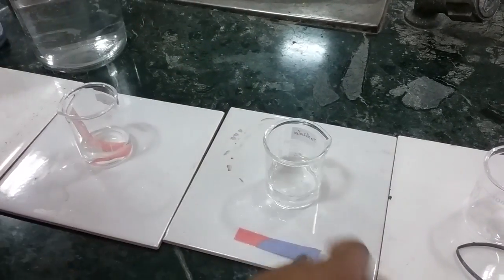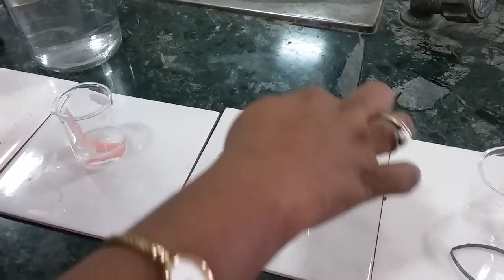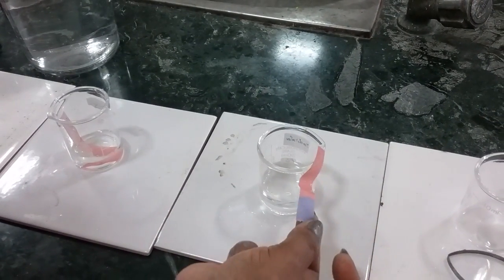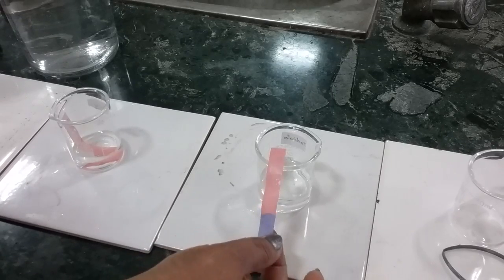Shall we test with blue litmus now? When you put blue litmus into H2SO4, the blue litmus turns pink. This also proves it is an acid.